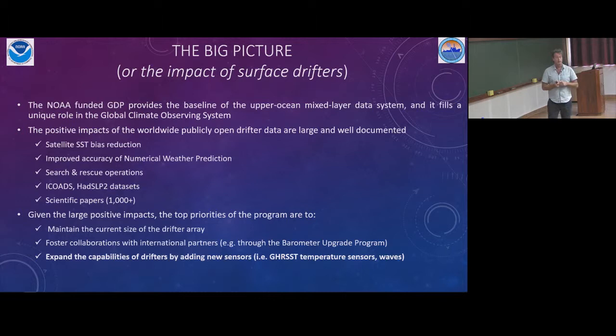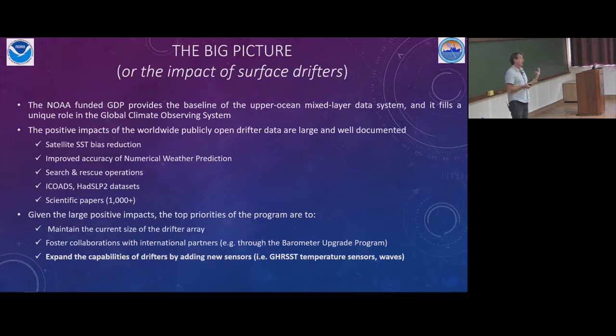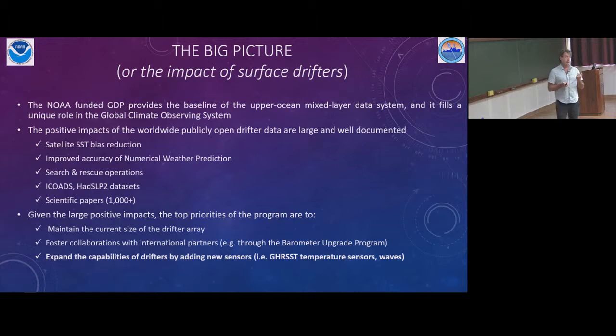The second big area is numerical weather prediction. Many drifters have barometers installed, and the availability of data in real time through the global telecommunication system ensures the data are ingested into models, with a large positive impact on numerical weather prediction and keeping errors small. The third area is ocean currents, which is not much of a concern beyond oceanography but is very important to many of us.